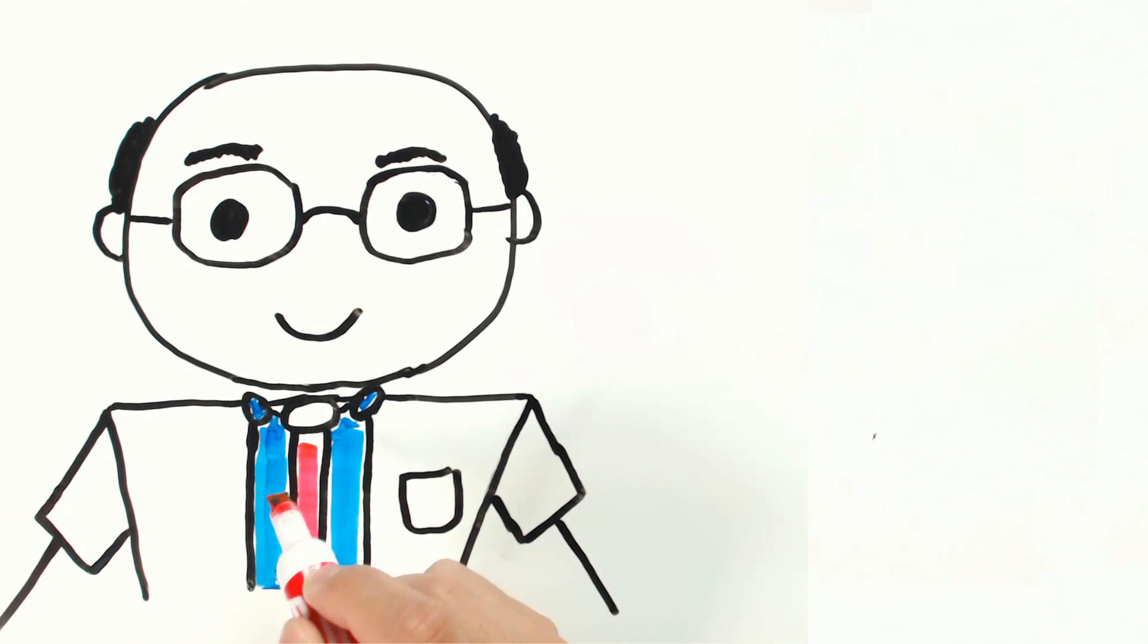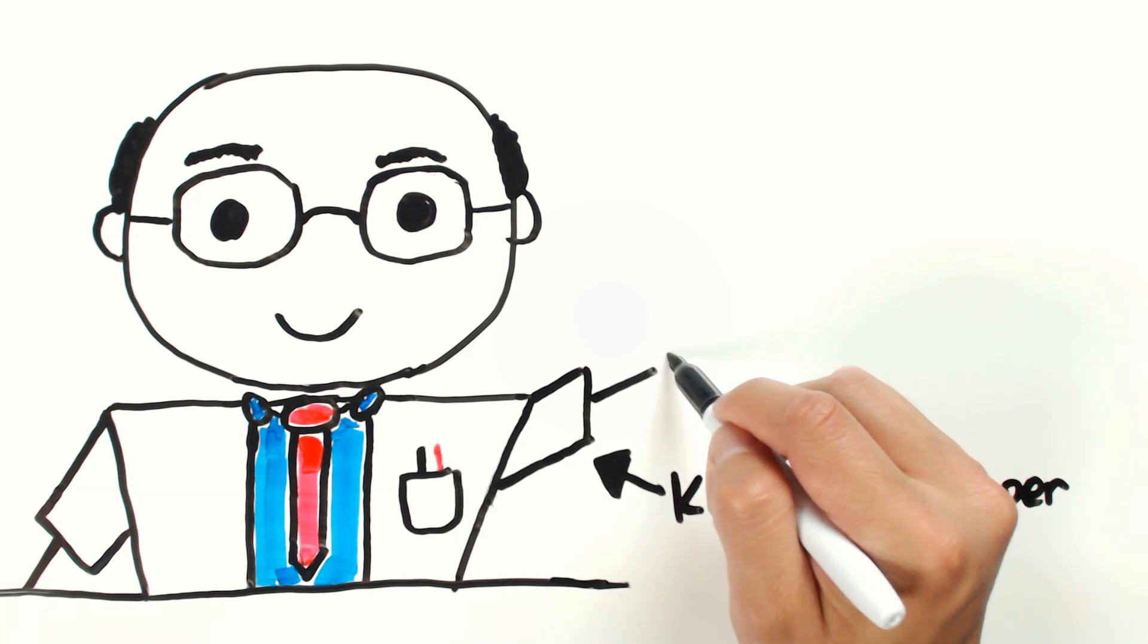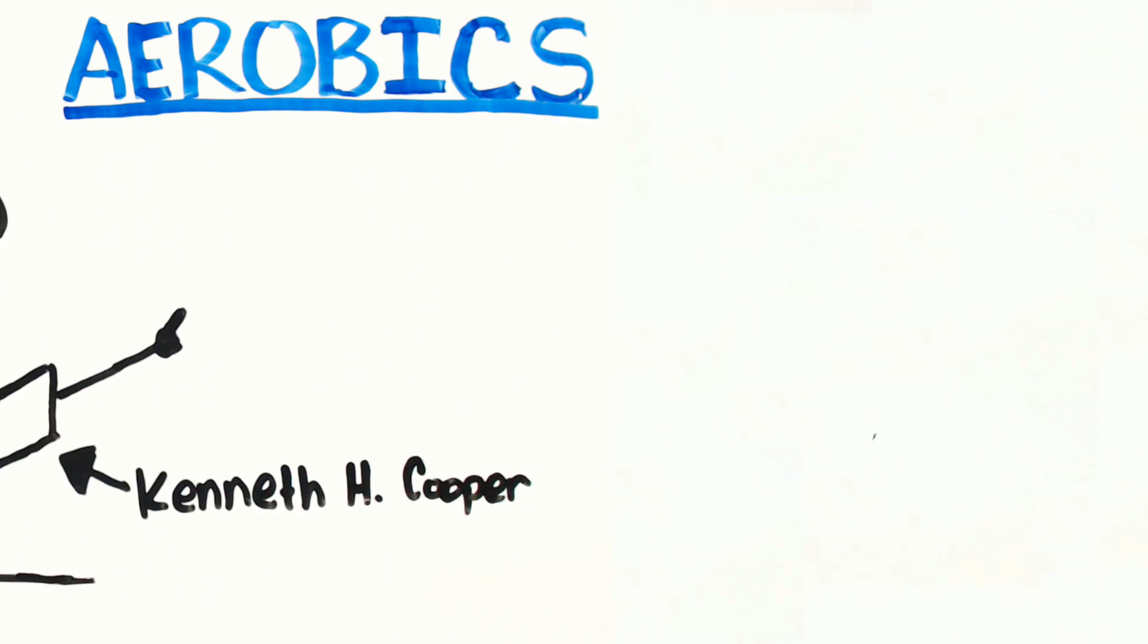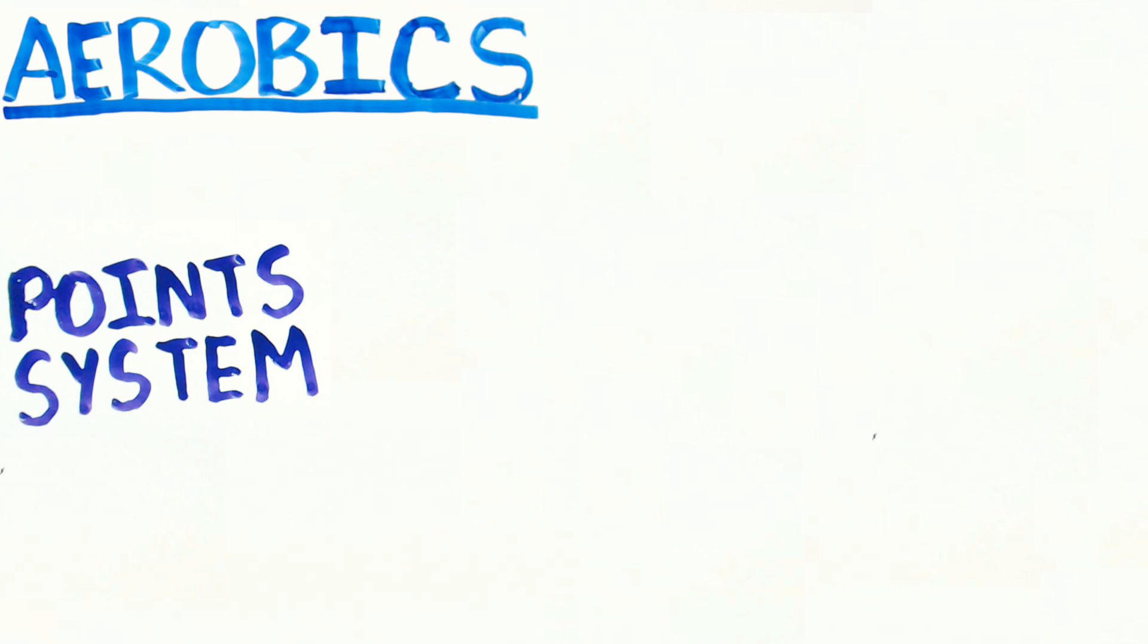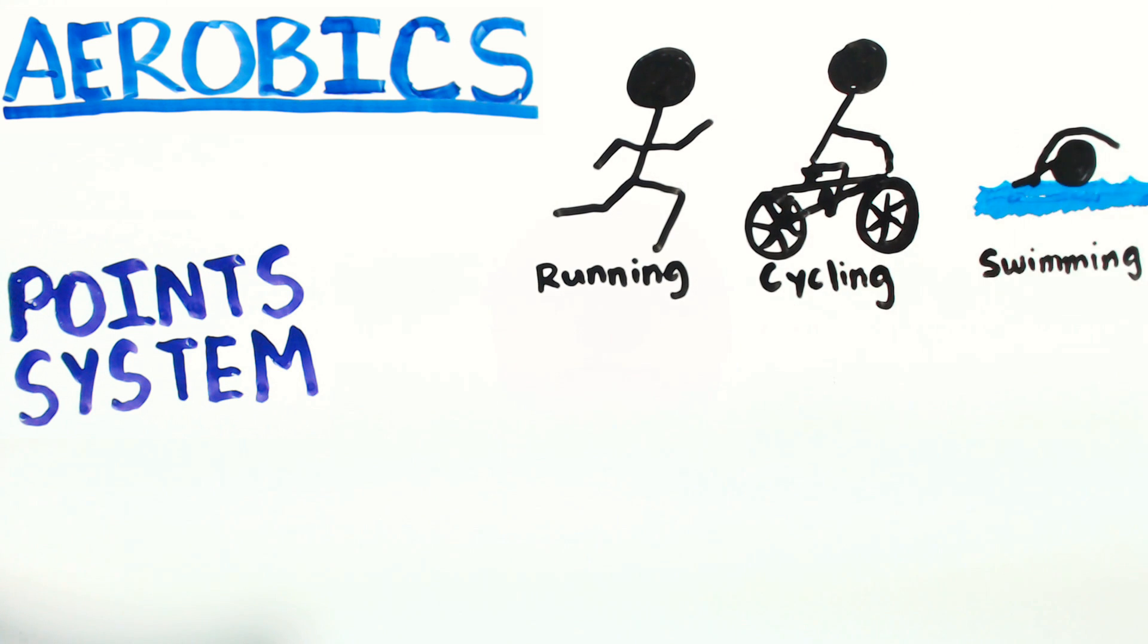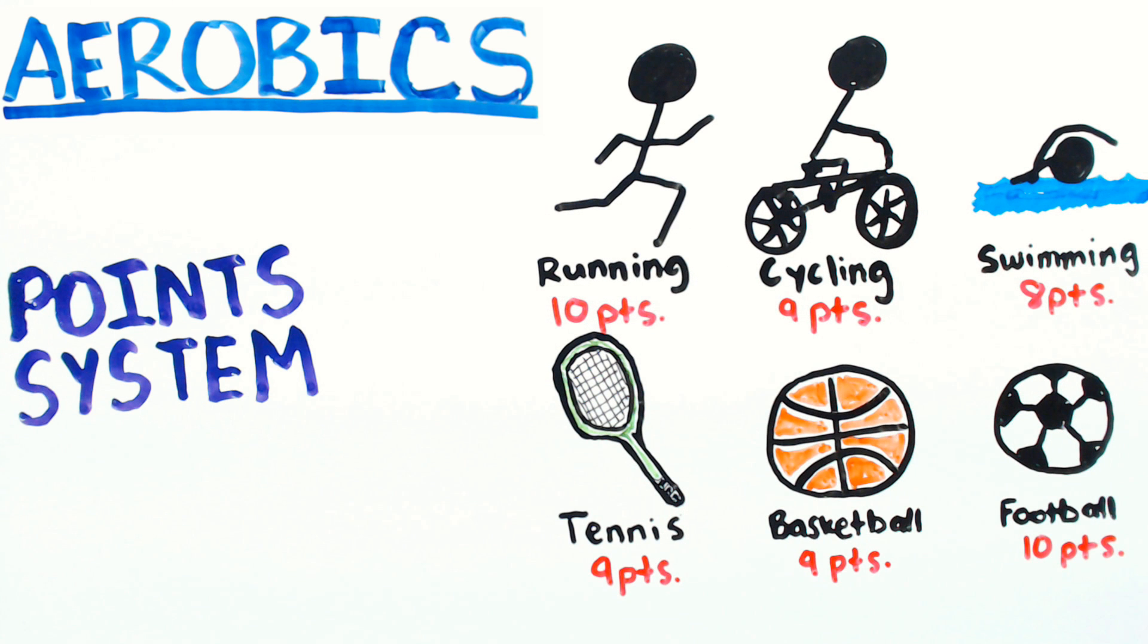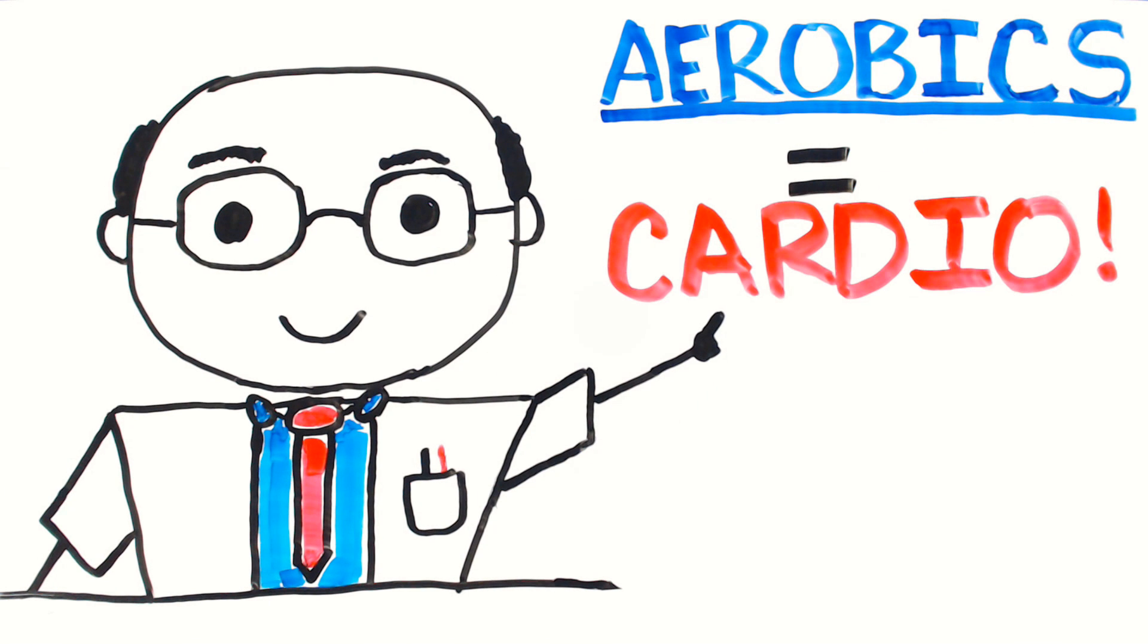In the 1960s, a man named Kenneth H. Cooper came up with the concept of aerobics. Originally, aerobics, via the aerobics point system, measured the effectiveness of different exercises and activities for improving cardiovascular health. This led to the coining of the term today known as cardio.